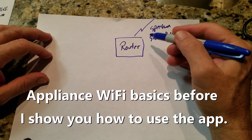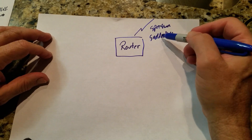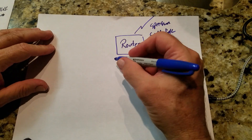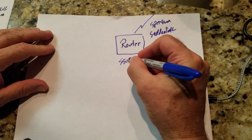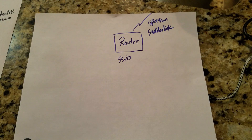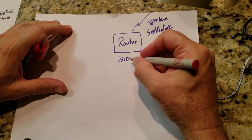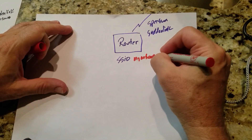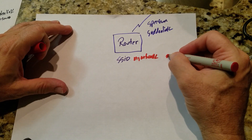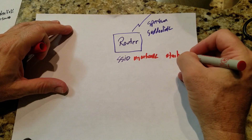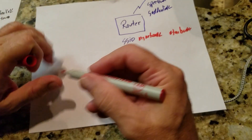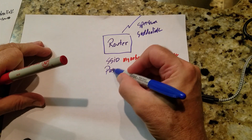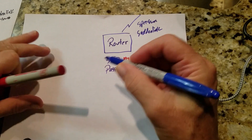Most houses will have a router and a network provider like Spectrum or Southern Link, or you could even have that in your phone as a hotspot. You're going to have an SSID — that's the name of your network. You've seen those before, like Starbucks when you want to connect; that's your SSID.